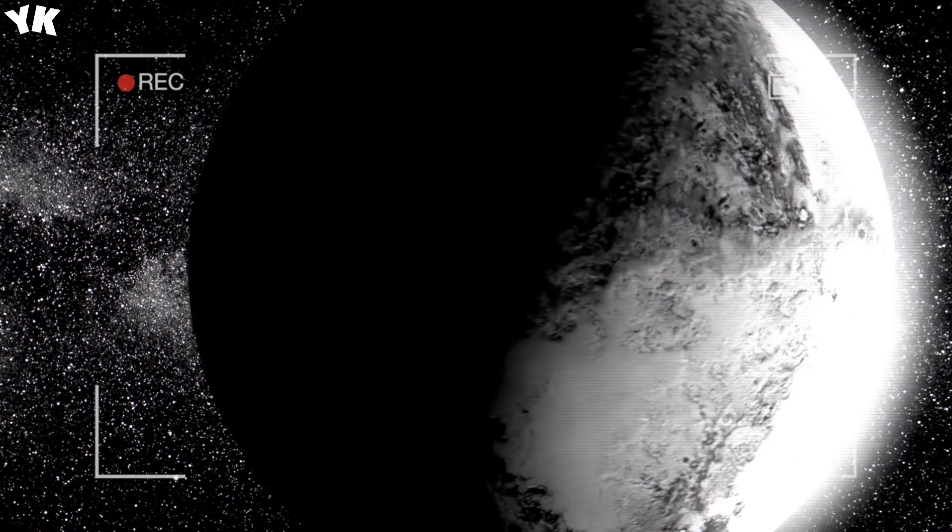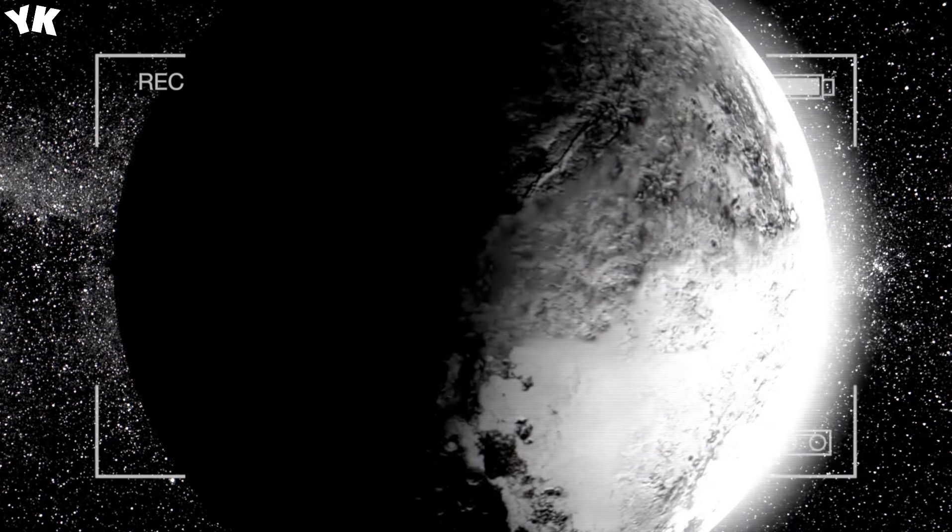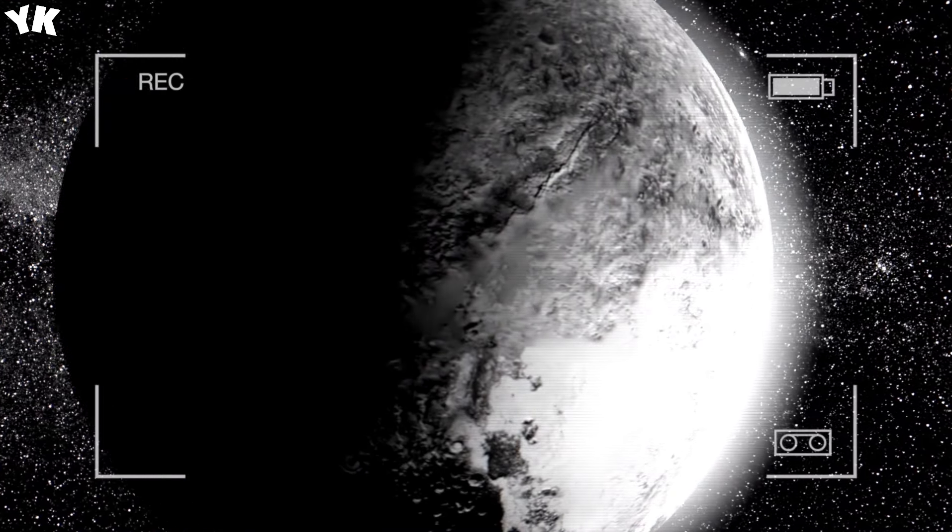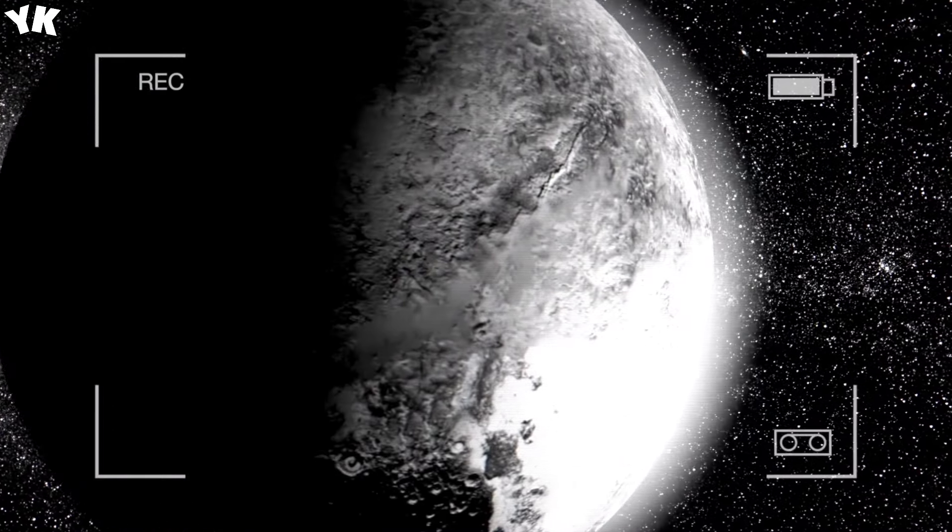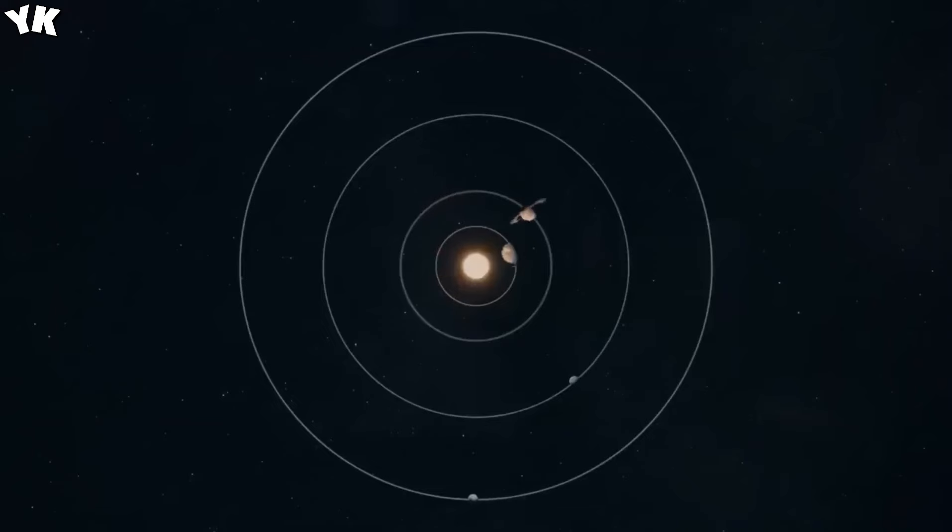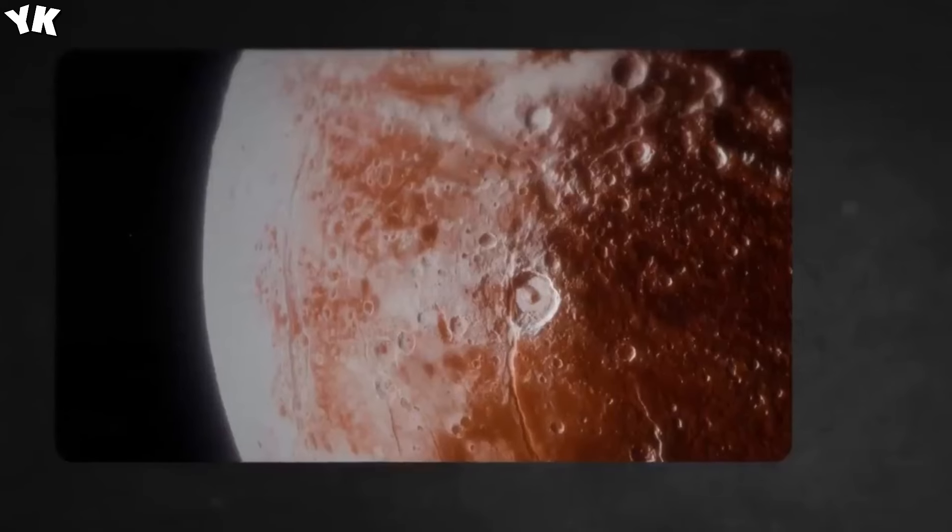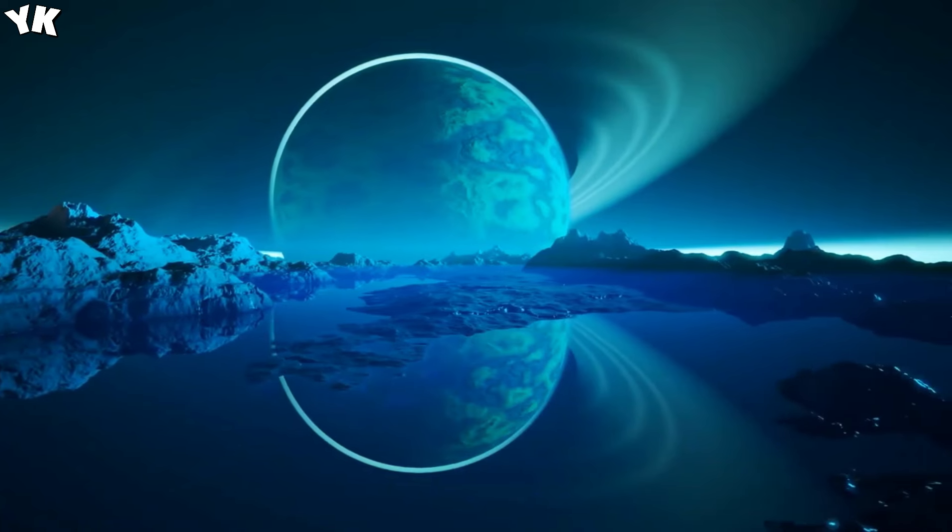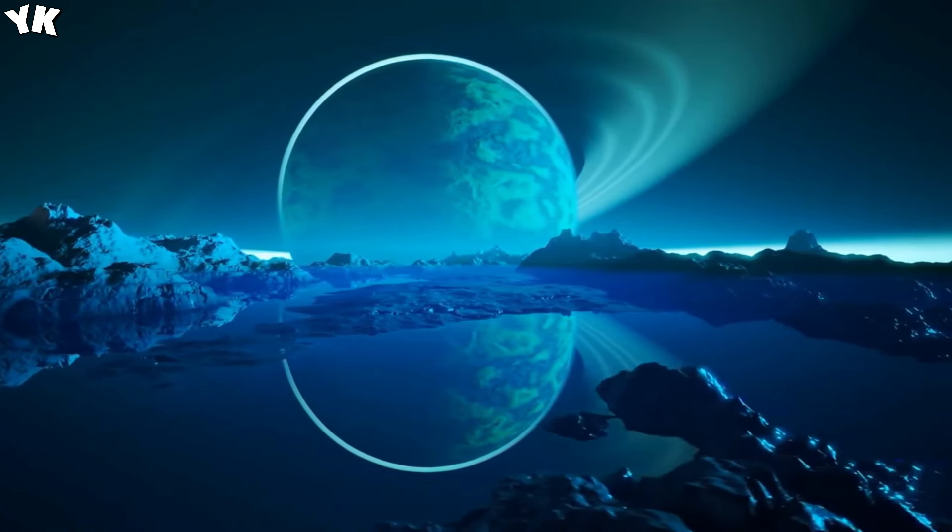The New Horizons mission provided unprecedented insights into Pluto's mysteries. Images revealed a landscape marked by fissures and a remarkably spherical shape, hinting at possible hidden complexities. Some scientists interpret these findings as indications of something even more extraordinary lying beneath the surface.